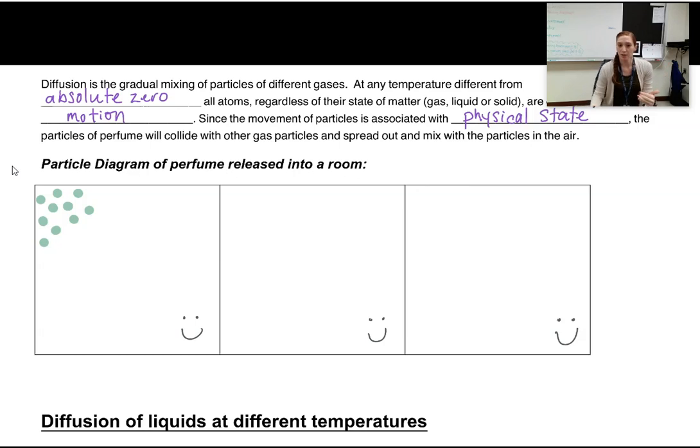Now, just like I just talked about at any temperature other than absolute zero, all of these particles, regardless of whether they're solid, liquid, and gas are going to be constantly moving. So what happens is gradually these particles of scent, whatever they may be, perfume is what we're talking about here, are going to start bumping into other particles in the room, air particles, whatever that's going to consist of. So it'll be bumping into oxygen and nitrogen and carbon dioxide. And as that happens, they're going to bump and they're going to spread out.